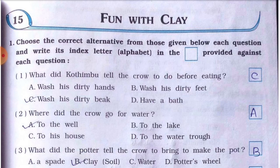Number 2: Where did the crow go for water? Options are: A) to the well, B) to the lake, C) to his house, D) to the water trough. The answer is A — to the well. The crow goes to the well.